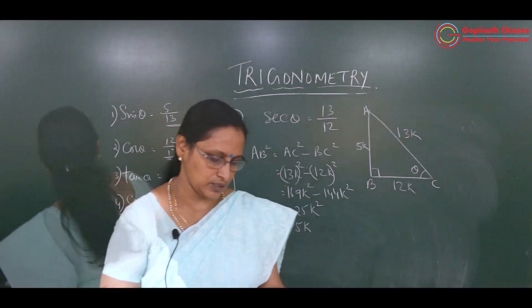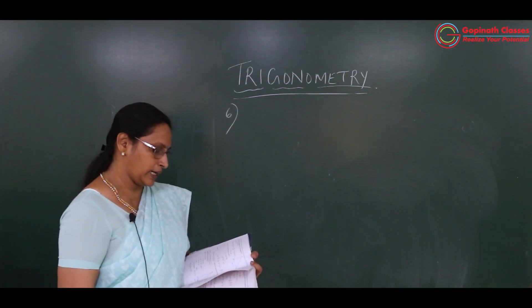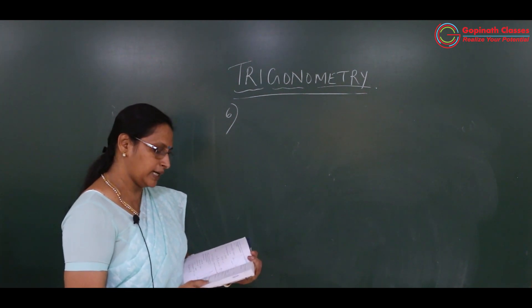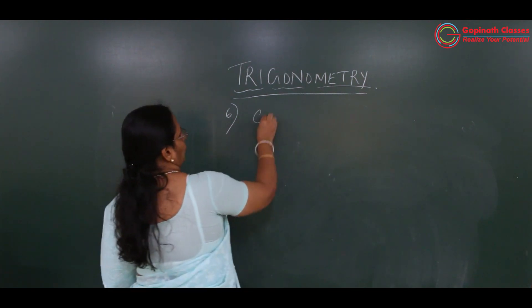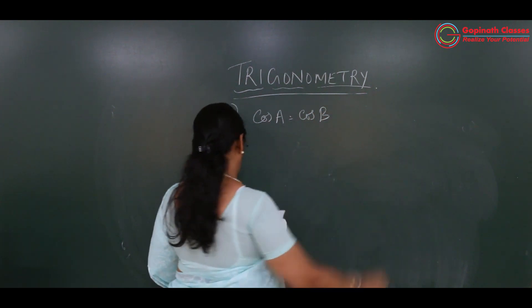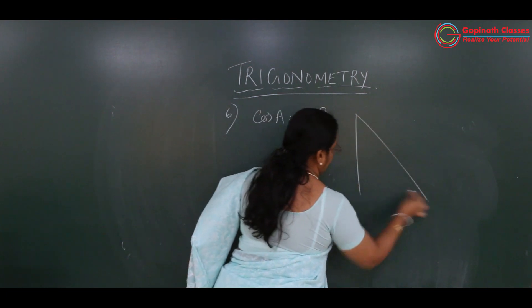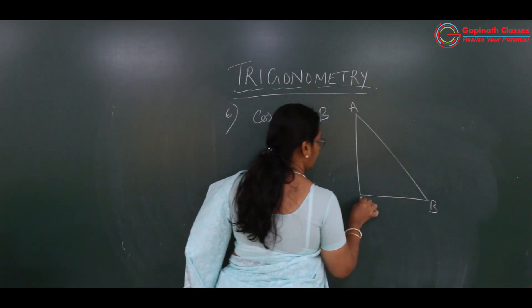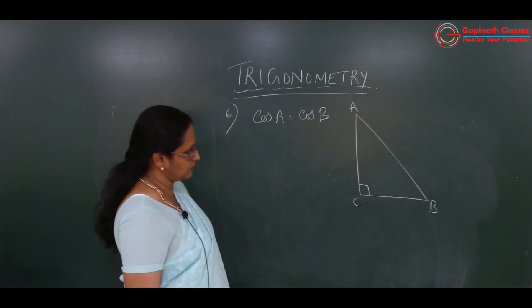Come to the sixth question. It is given: if angle A and angle B are acute angles such that cos A is equal to cos B, show that angle A equals angle B. It is given cos A is equal to cos B — cos of angle A is the same as cos of angle B for any two acute angles A and B.